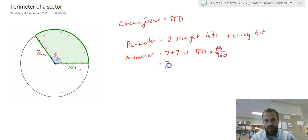So that gives us seven plus seven, plus pi d. Now this is a tricky bit here, because the diameter of this circle is not seven, that's the radius. The diameter is 14, so pi times 14 times theta, 126, over 360.